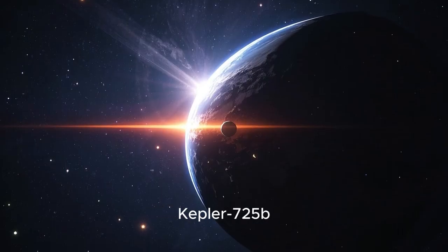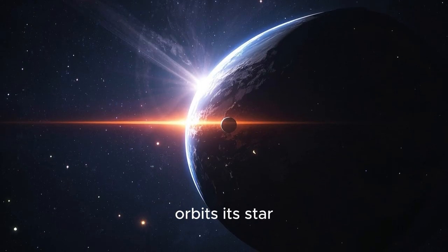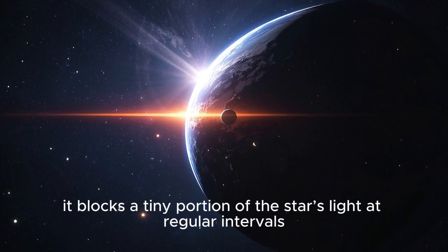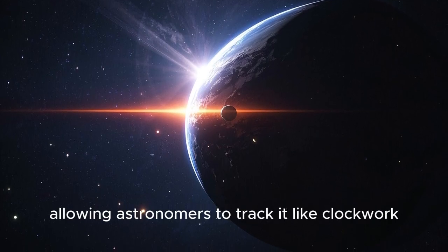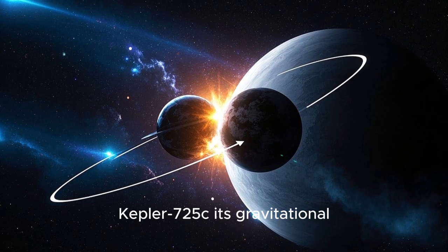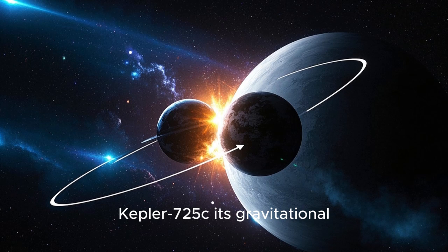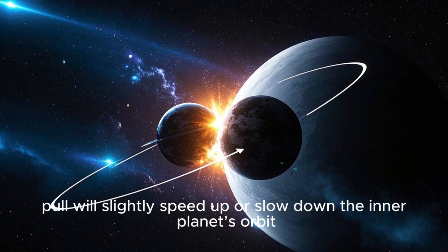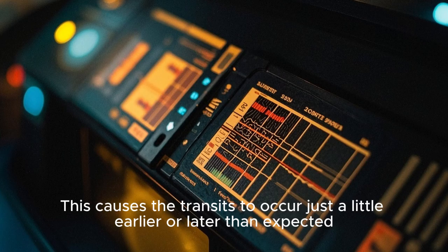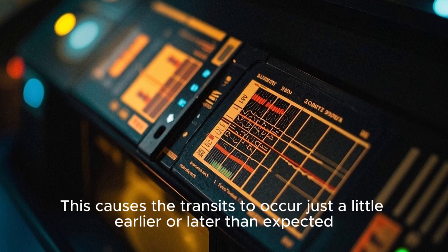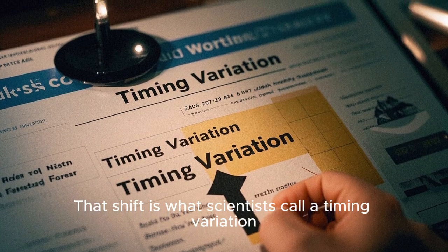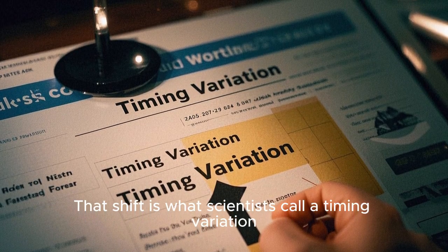When a planet like Kepler-725b orbits its star, it blocks a tiny portion of the star's light at regular intervals, allowing astronomers to track it like clockwork. But if there's another planet nearby, say Kepler-725c, its gravitational pull will slightly speed up or slow down the inner planet's orbit. This causes the transits to occur just a little earlier or later than expected. That shift is what scientists call a timing variation.